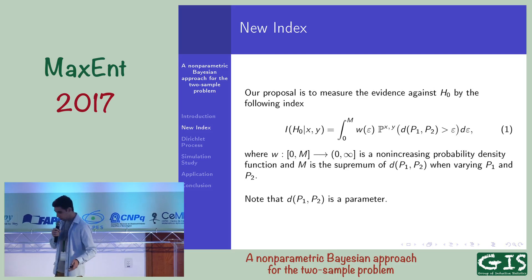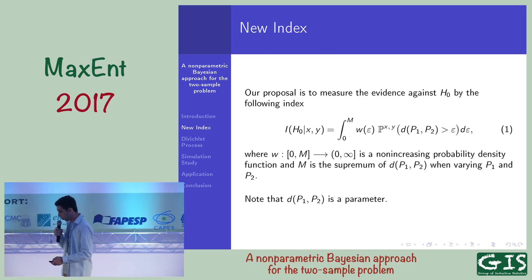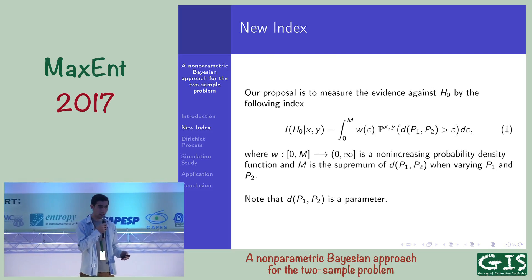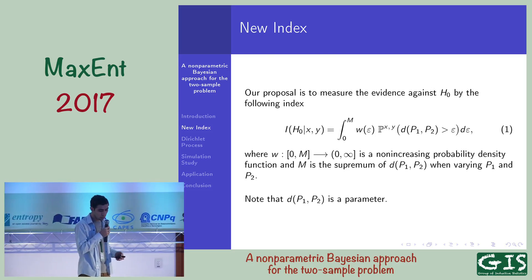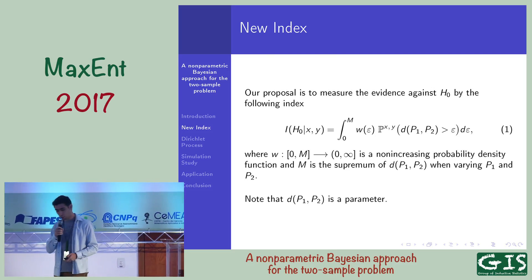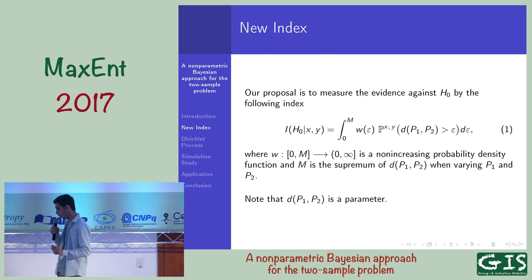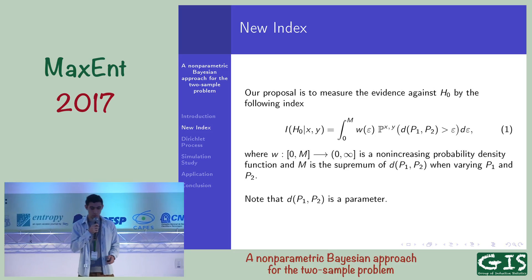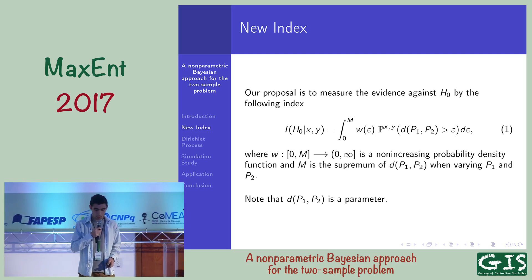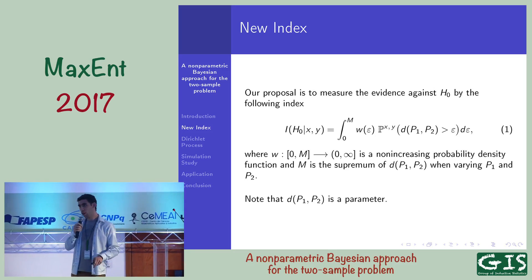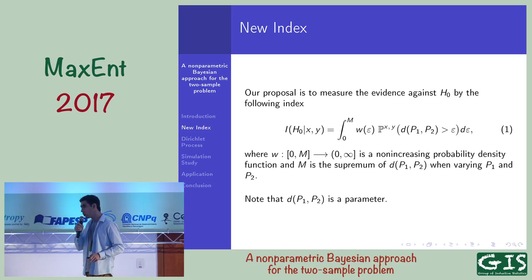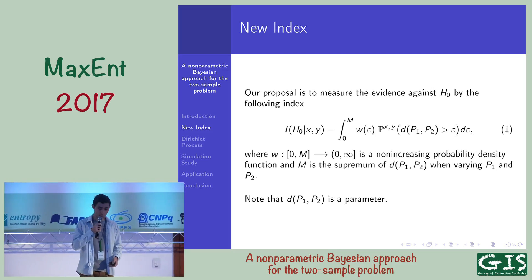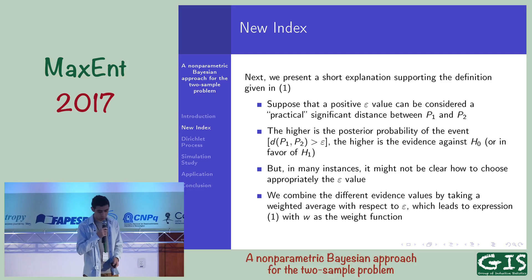Our proposal is to measure the evidence against the null hypothesis H0 by the following index, given in expression 1. Here, w is a non-negative density function, and m is the supremum of the distance between the populations. Note that the distance between the populations is a parameter.